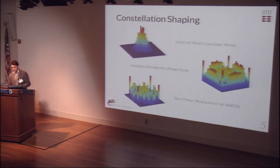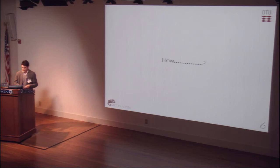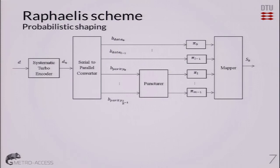But how do we obtain this? How do we transform distributions into constellations? There are two ways. One is geometric, as I showed with the previous star-QAM constellation — by accumulating points around certain power areas, those points obviously become more likely to occur. Another way is probabilistic shaping: we literally transform the probability of occurrence of our symbols through coding. Among the many methods to achieve this through coding, we chose the Raphaël scheme, which is simple, easy to understand, and somehow general and easy to scale.